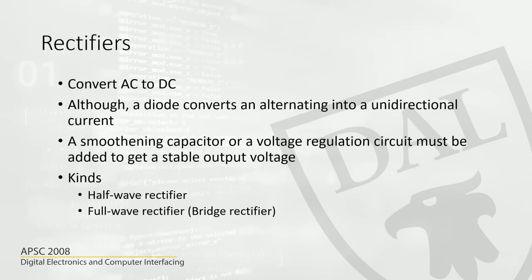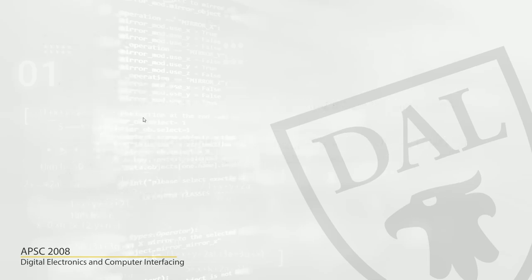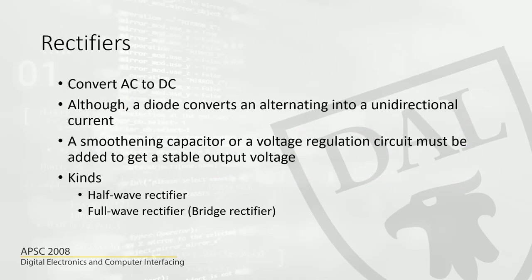Rectifiers. We use rectifiers to convert alternating current to direct current. The diode actually converts alternating current into a unidirectional current — it is not direct current. For direct current, the voltage has to be stable, but here we are converting alternating current into a unidirectional current, which means the current will flow only in one direction. To get a stable output voltage, we need to attach a smoothing capacitor or a voltage regulator.